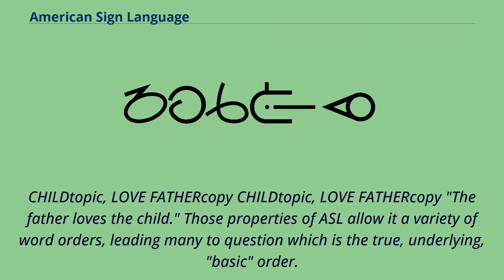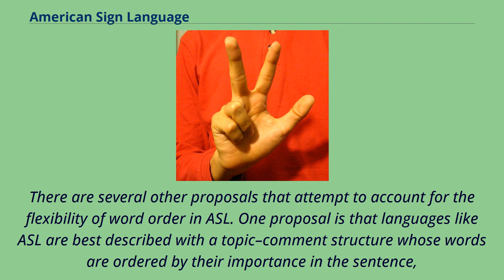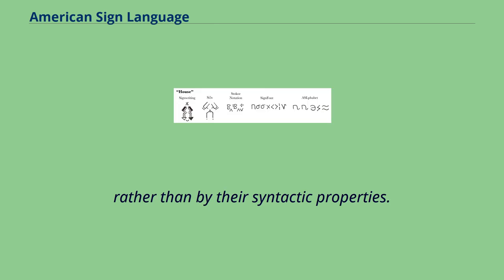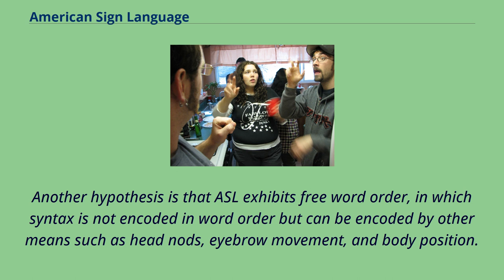Those properties of ASL allow it a variety of word orders, leading many to question which is the true underlying basic order. There are several other proposals that attempt to account for the flexibility of word order in ASL. One proposal is that languages like ASL are best described with a topic-comment structure whose words are ordered by their importance in the sentence rather than by their syntactic properties. Another hypothesis is that ASL exhibits free word order, in which syntax is not encoded in word order but can be encoded by other means such as head nods, eyebrow movement, and body position.